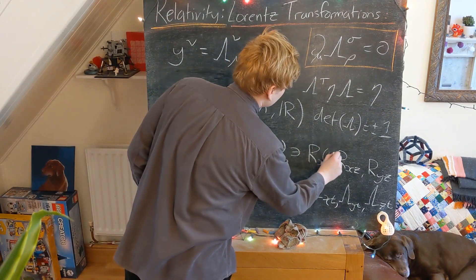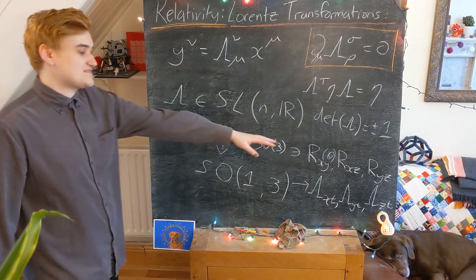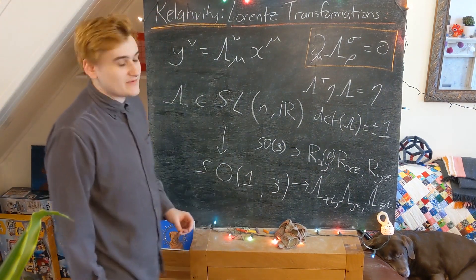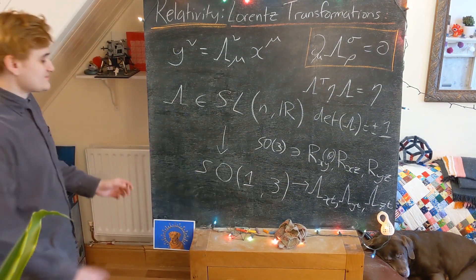And just remember that these are all continuous. They all depend on some parameter. And so there's going to be six of these parameters corresponding to the dimensionality of the group. So this is what we call the Lorentz group.